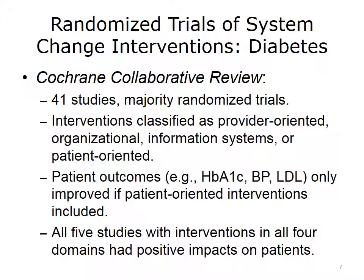A randomized control trial is where we have at least two groups — one group not receiving the treatment and another group that is. In an ideal situation, both sets of individuals would be blind to whether or not they are receiving the treatment. You might think of a drug trial where everybody gets a pill: half are only getting a sugar pill while the other half are getting a treatment, and then we see how their outcomes change over time. There's been quite a lot of work done around diabetes, particularly better control of lipids and cholesterol panels, often referred to as HbA1c, blood pressure, and LDL tests.